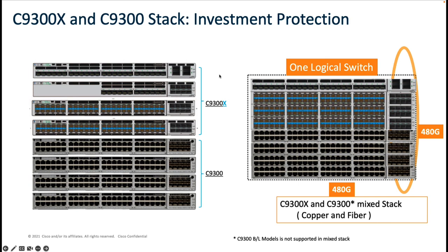For customers already using Catalyst 9300, we have integrated support for mix stacking between the Catalyst 9300 and 9300X to enable newer use cases and provide investment protection. You can mix stack a maximum of eight Catalyst 9300 and 9300X switches to form one logical unit capable of 480G of bandwidth. One important note: the SDM template and switch scale will be set to the lowest common denominator — the Catalyst 9300 — in a mixed stack.